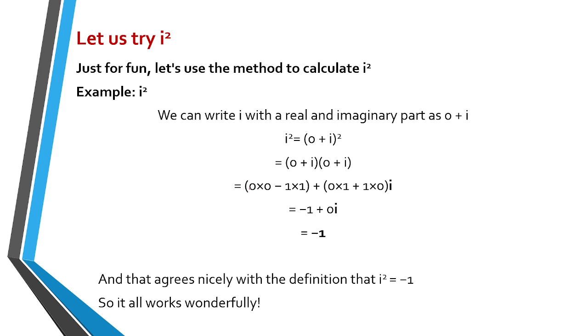Going back, 0 times 0 minus (bd) 1 times 1, so we have -1 plus 0 times 1 plus 1 times 0, which is i. So -1 plus 0 times i, 0 times i is equal to 0, then this is equal to -1. So we prove i² is equal to -1. And that agrees nicely with the definition that i² equals -1. So it all works wonderfully.